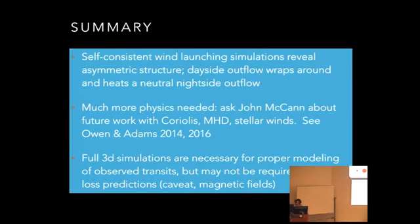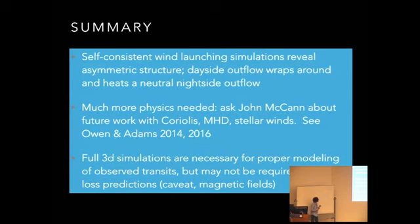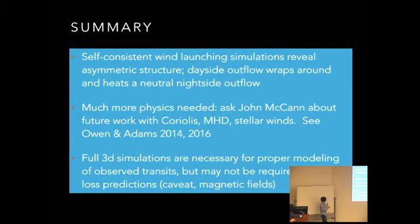In conclusion, self-consistent wind launching simulations show interesting asymmetric structure, particularly the driving of the dayside flow wrapping around the night side of the planet. Eventually when more physics is put in — including Coriolis forces, MHD, and stellar winds, which is something John McCann, who's soon to be a graduate student here, is working on — I think we're going to see some really interesting observational modeling tools at our disposal. I should also point out that James Owen and Fred Adams have done some really interesting work on this, especially focusing on the role of magnetic confinement, so you should talk to both of them about that aspect of the problem.